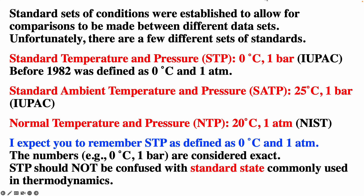There are standard sets of conditions used to allow comparisons between data sets. STP is standard temperature and pressure: zero degrees Celsius and one bar, used by IUPAC. SATP is standard ambient temperature and pressure: 25 degrees Celsius and one bar. NTP is normal temperature and pressure: 20 degrees Celsius and one atmosphere, developed by NIST. In this course, we'll treat STP as zero degrees Celsius and one atmosphere. Don't confuse STP with standard state, which means the most stable configuration for a system — for example, standard state for oxygen is O2 gas.